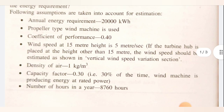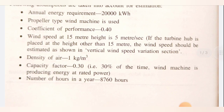The following assumptions are taken into account for the estimation. Annual energy requirement of the industry is 20,000 kilowatt-hours. A propeller type wind machine is used. The coefficient of performance (CP) varies from 0.30 to 0.50 for a windmill, but here we consider CP = 0.40, that is 40 percent. Next, wind speed at 50-meter height is 5 meters per second.